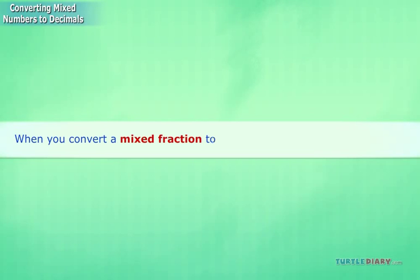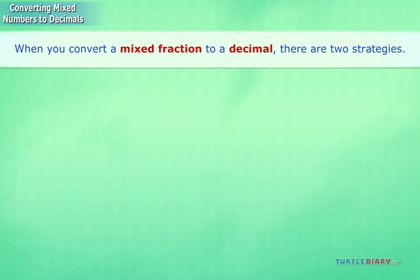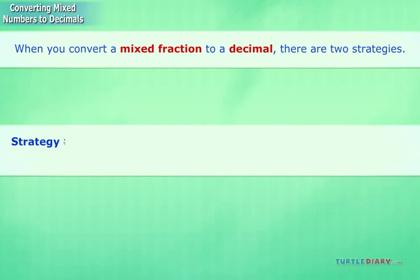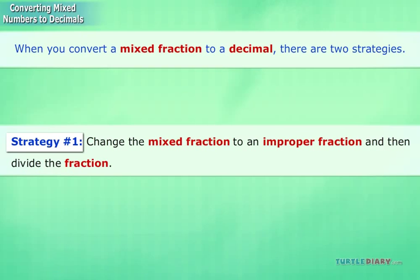When you convert a mixed fraction to a decimal, there are two strategies. Strategy number 1: change the mixed fraction to an improper fraction, and then divide the fraction.